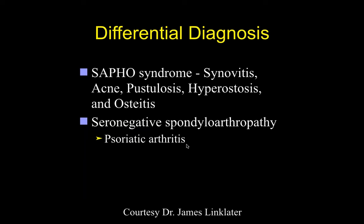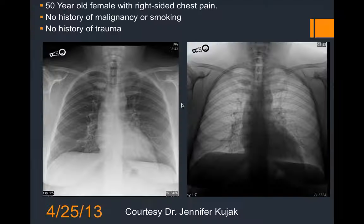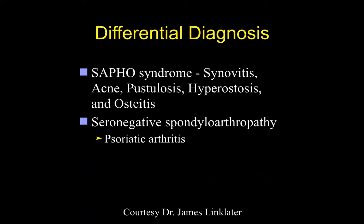A couple of syndromes can present this way. Psoriatic arthritis is one. The SAPHO syndrome is another — it stands for Synovitis, Acne, Pustulosis, Hyperostosis, and Osteitis. The condition can be migratory and involve different joints around the body. These are a group of poorly characterized diseases.